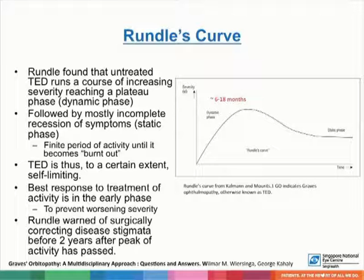Rundle's curve demonstrates how severity of thyroid orbitopathy follows a temporal relationship. Rundle found that untreated thyroid eye disease runs a course of increasing severity, which reaches a plateau and thereafter follows a mostly incomplete recession of symptoms or static phase. It is thus, to a certain extent, a self-limiting condition. The best response to treatment of the activity is in the early phase to prevent worsening of the severity. However, Rundle warned that correcting any stigmata of the disease before two years of the peak of activity has passed may have complications.